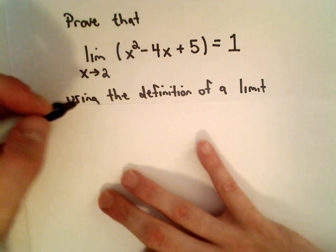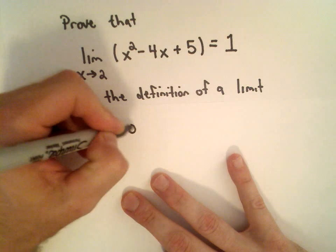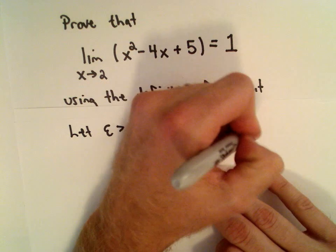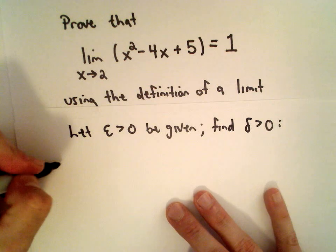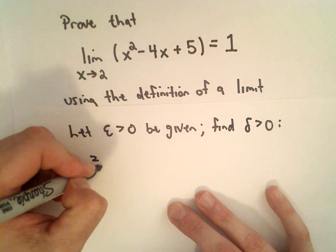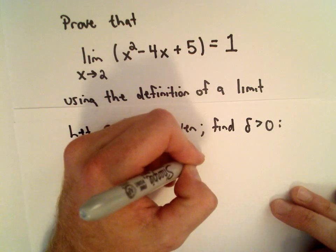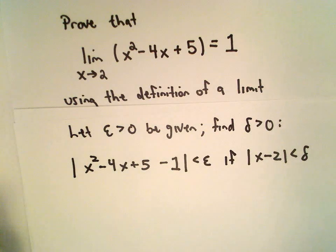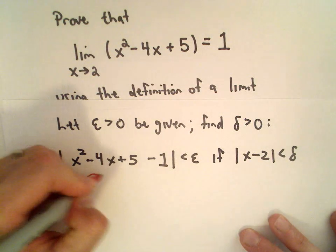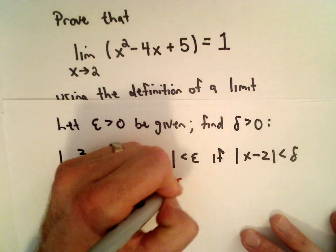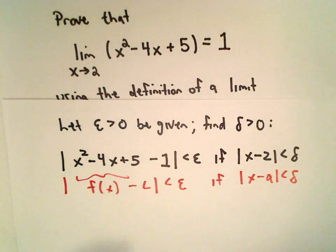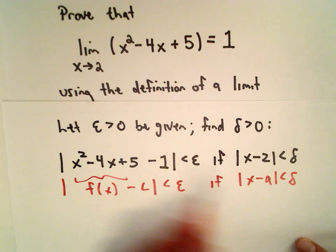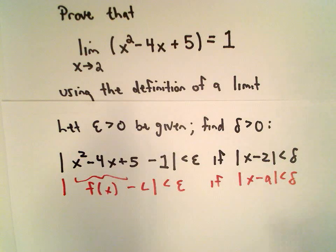The idea is we're going to let some value of epsilon greater than 0 be given — that gets specified to us. Our goal is to find a value for delta greater than 0 such that the absolute value of x squared minus 4x plus 5 minus 1 is less than epsilon, if the absolute value of x minus 2 is less than delta. So here, f(x) is x squared minus 4x plus 5, our limiting value L equals 1, and our a value equals 2.